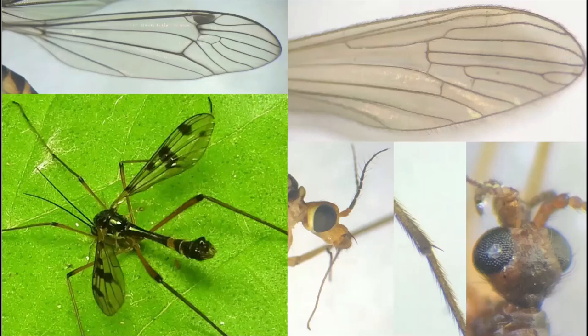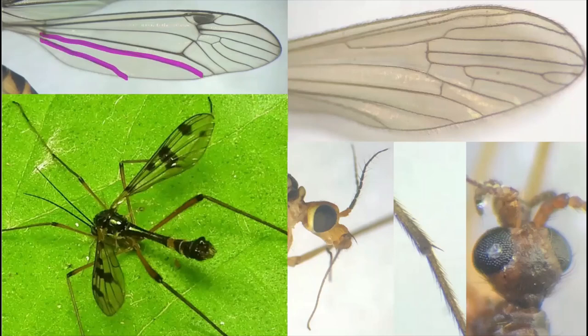The keys to crane flies rely heavily on wing venation. This can often be seen well enough to achieve at least a family level ID in a good field photo; however in some cases, particularly with smaller species, you may have to look at the wing backlit under a microscope or hand lens. The first feature you need to examine is the anal veins of the wing. In the four families comprising the Tipuloidea, or the true crane flies, two anal veins are present, as you can see in the top left here.